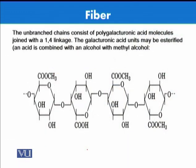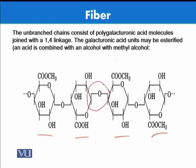If you look at the structure of pectin, it consists of polygalacturonic acids. These polygalacturonic acid molecules are linked together with a 1-4 linkage, similar to what we already looked at in the case of cellulose. So here again, polygalacturonic acid units are linked together with this 1-4 bond.